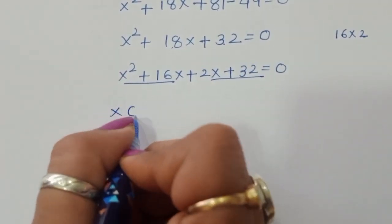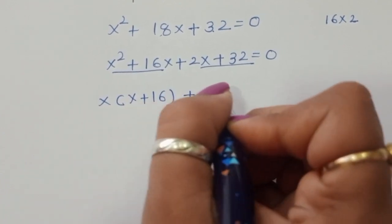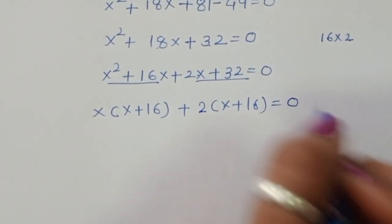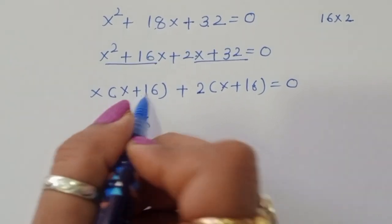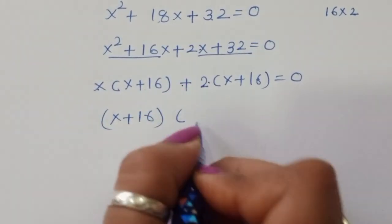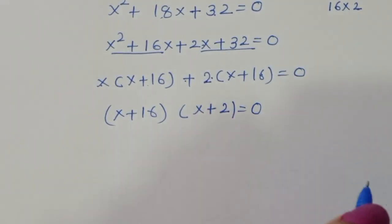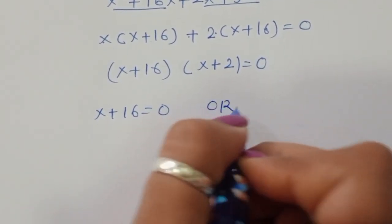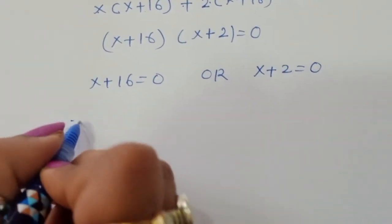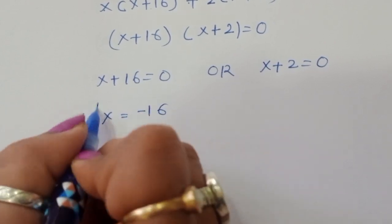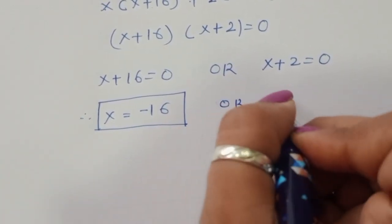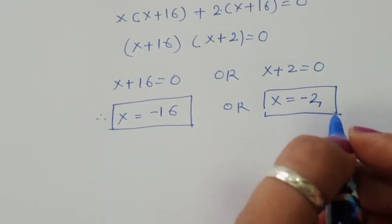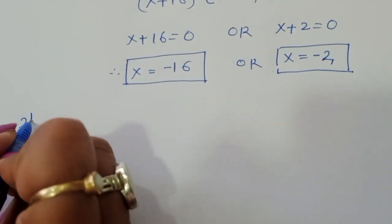Taking common factors: x(x + 16) + 2(x + 16) = 0. So (x + 16) is common, giving (x + 16)(x + 2) = 0. Therefore x + 16 = 0 or x + 2 = 0, so x = -16 or x = -2. This is from the first method. Now we use the second method.